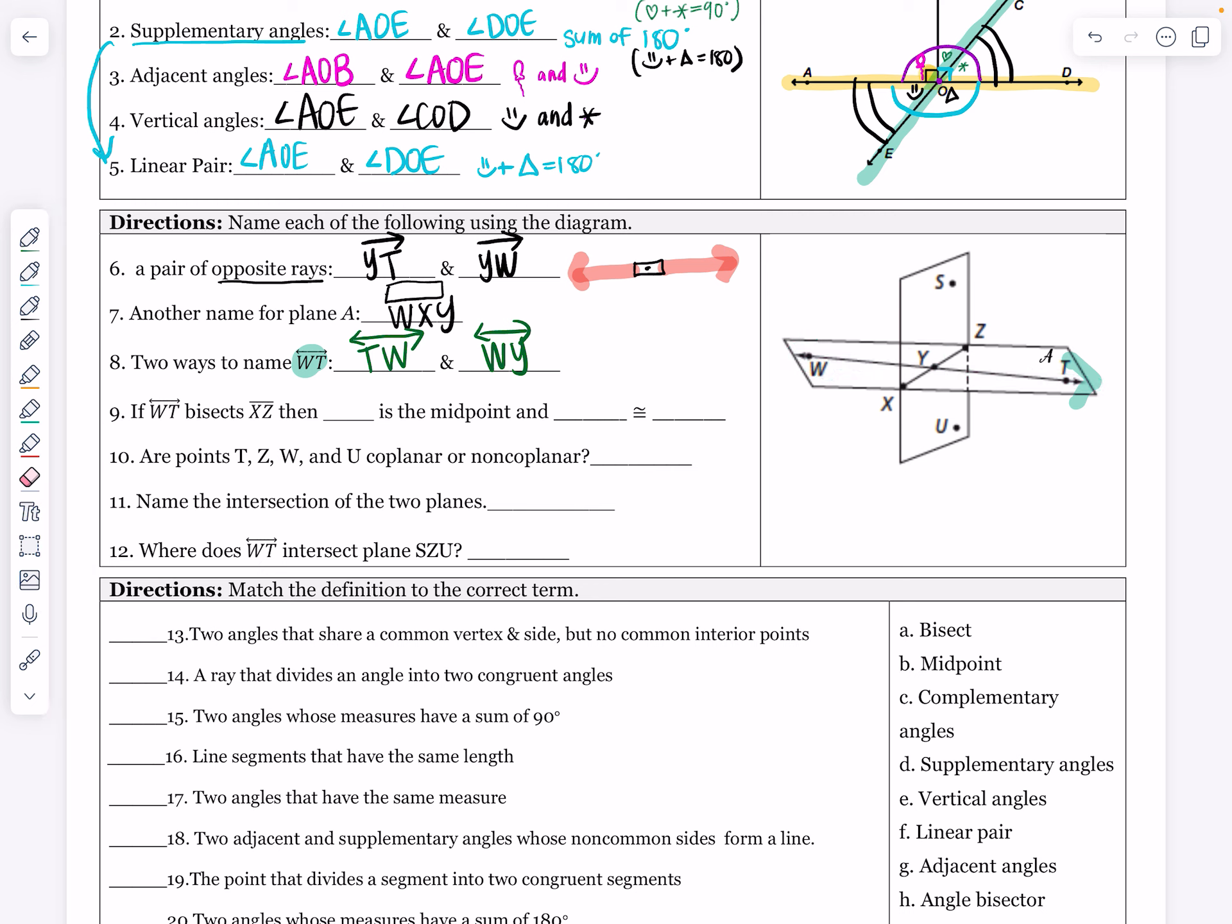Let's do number nine. If this line WT bisects this segment - which segment is it bisecting? Bisects XZ, which means it cuts it in half. Then point Y is going to be the midpoint, Y is smack dab in the middle. We know that from X to Y is going to be congruent to Z to Y. Those two smaller pieces, those two teeny tiny blue pieces, are going to be congruent because that red lightsaber cuts that segment in half, breaking it into two equal pieces.